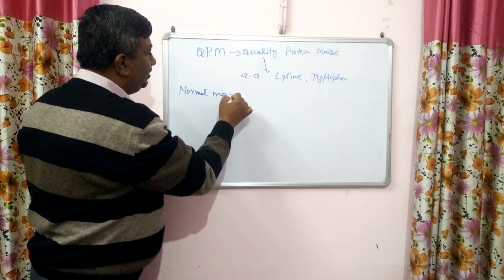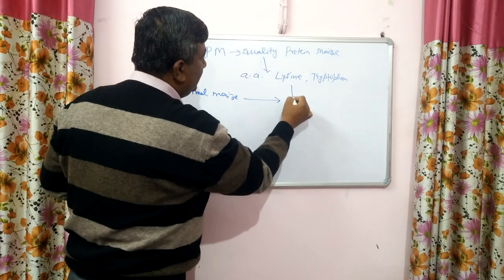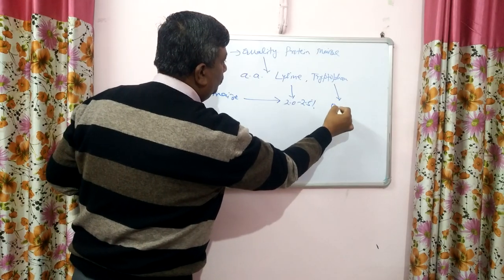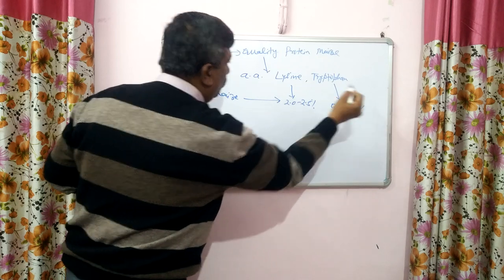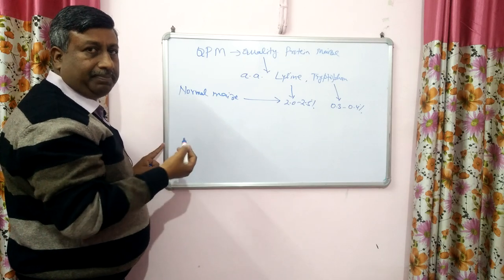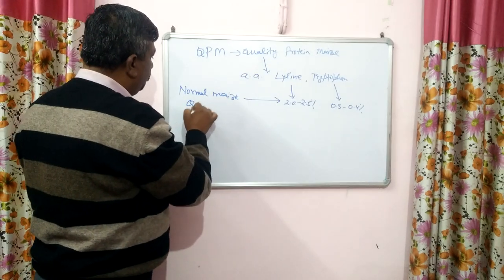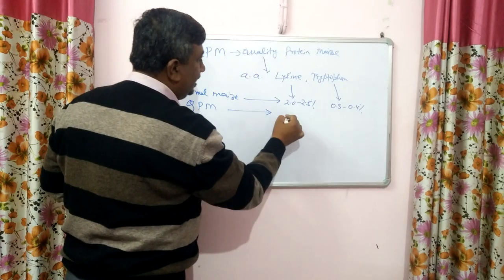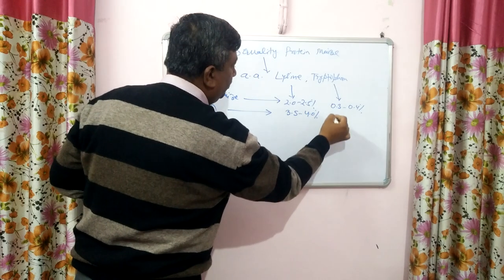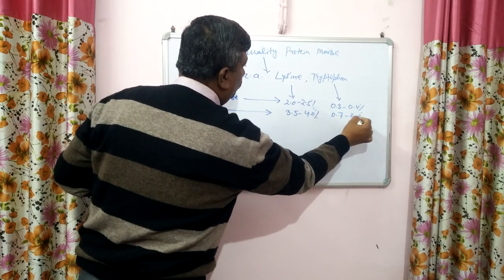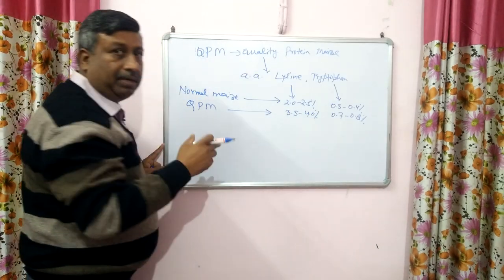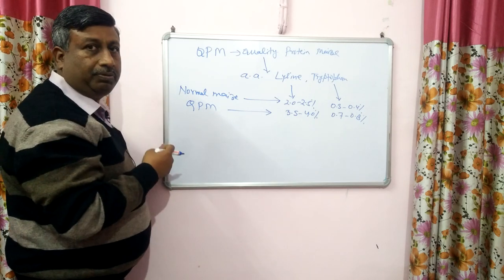In normal maize, the quantity of lysine is about 2 to 2.5% and tryptophan content is about 0.3 to 0.4%. But Quality Protein Maize is developed by breeding, and QPM contains lysine about 3.5 to 4% and tryptophan about 0.7 to 0.8%. So the quantity of lysine and tryptophan is almost double compared to normal maize.